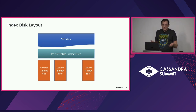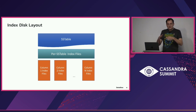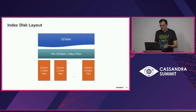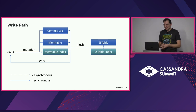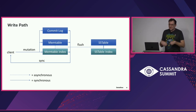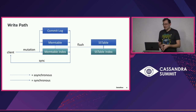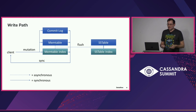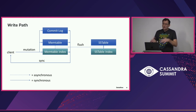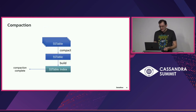Each indexed column also has its own components — typically a trie-structure or tree-based structure that allows us to quickly map between indexed term and row ID. When writing data to an indexed table, data goes as usual to memtable and commit log, and for the memtable we also have a memtable index. When the memtable fills up and it's time to flush, the memtable gets flushed into an SS table, and the memtable index is literally copied to an SS table index component. This process is fairly straightforward and efficient, and the flush happens asynchronously.